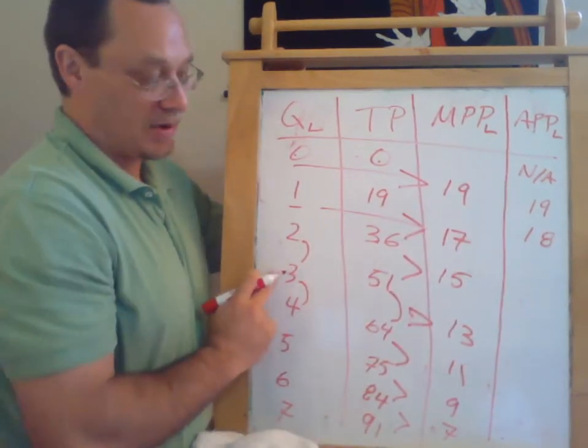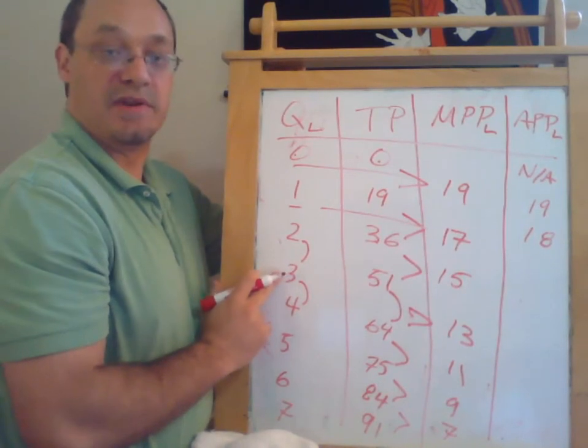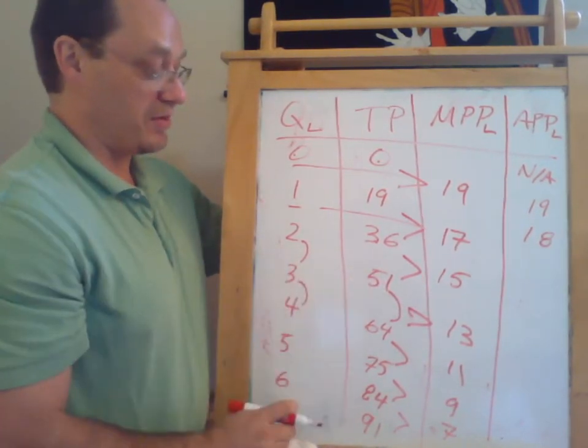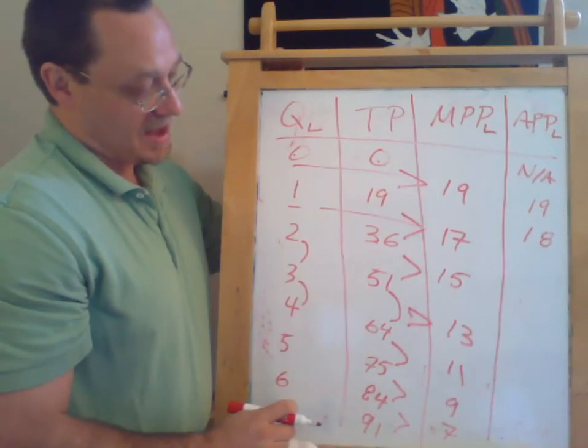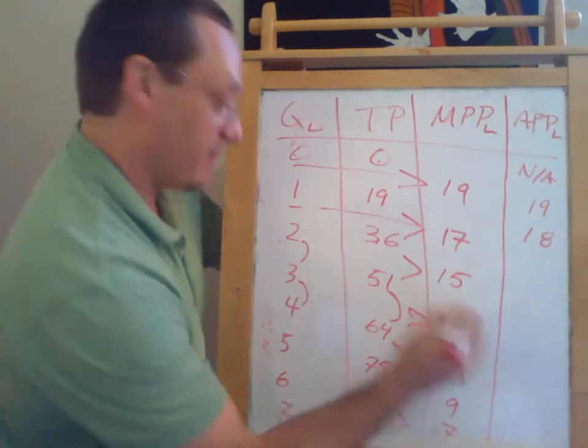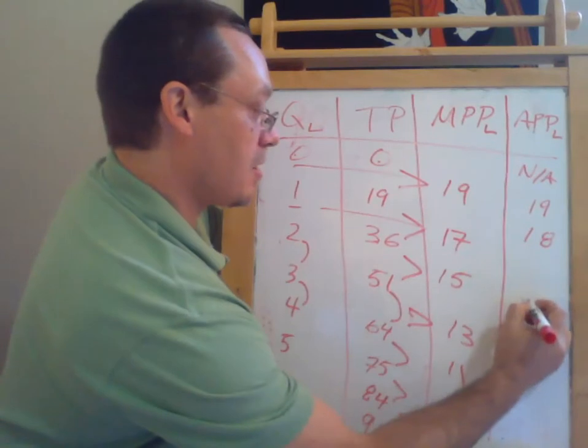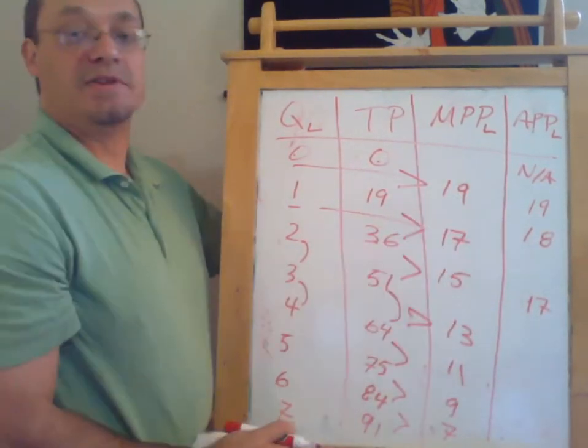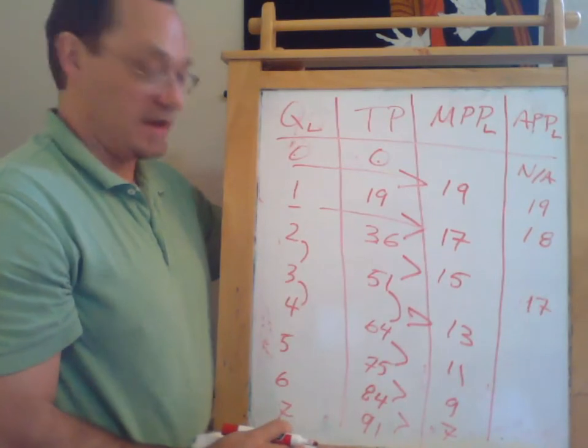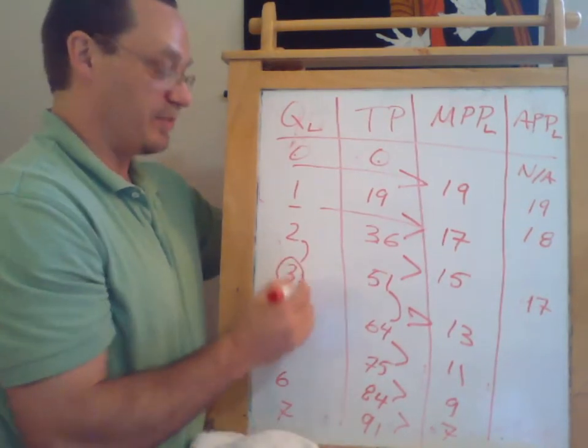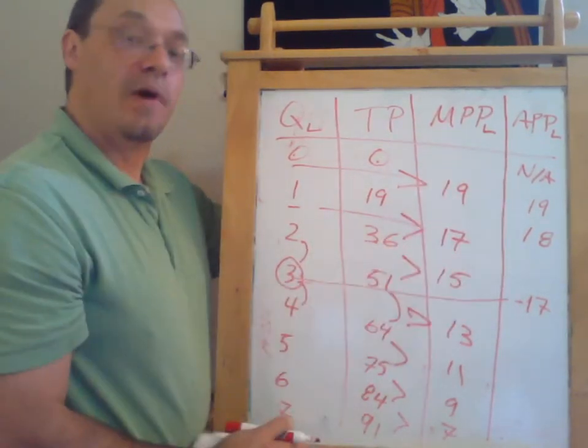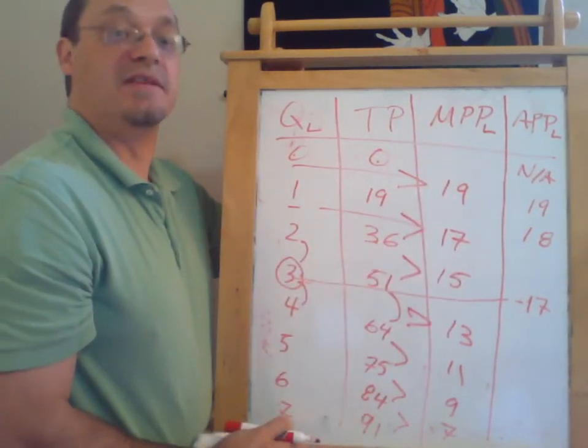When we go to calculate the average productivity when we have three workers, we would have 51 divided by three, and I think that's 17. And notice 17 is the average of 19, 17, and 15. So the average level of productivity for any given level of workers is the average of all the marginals up to that date.